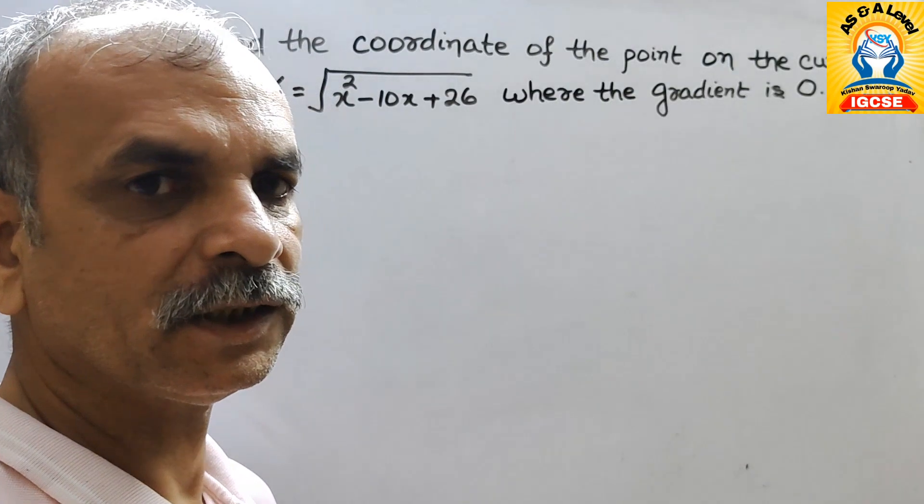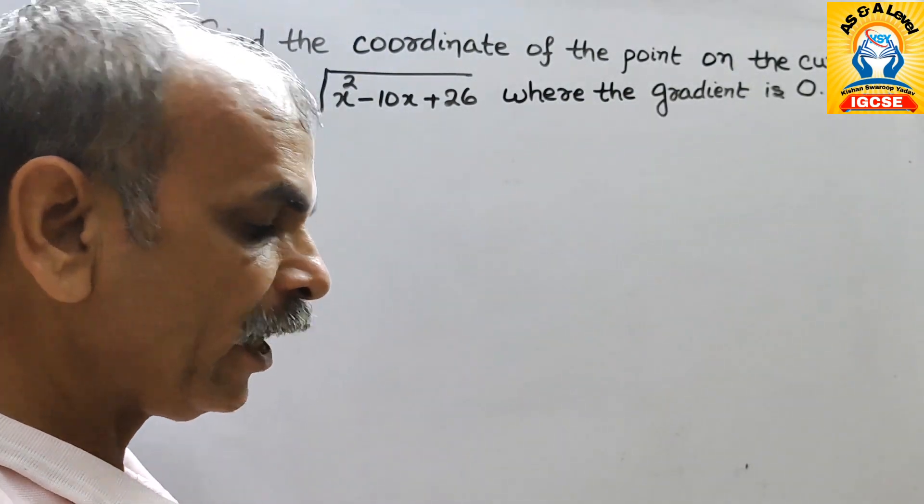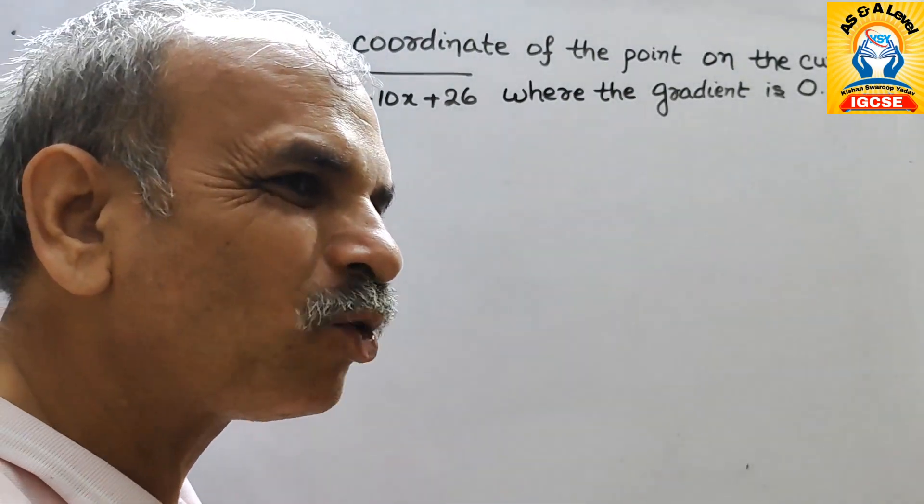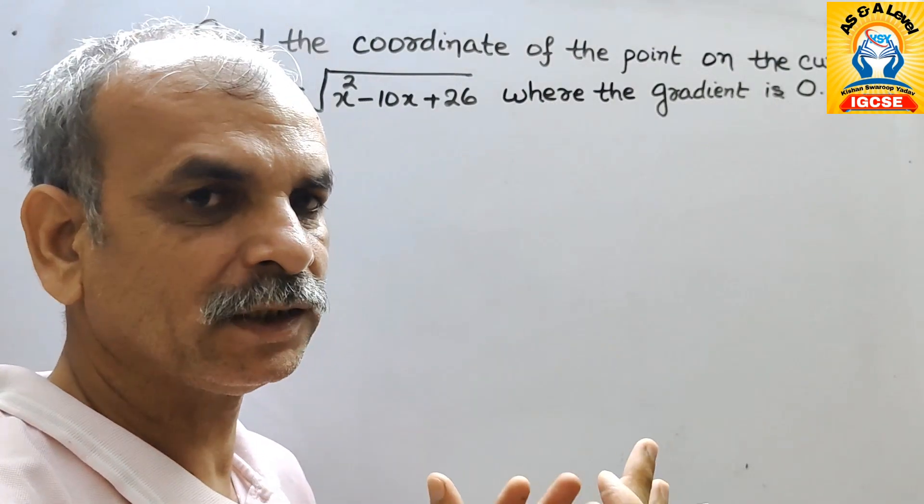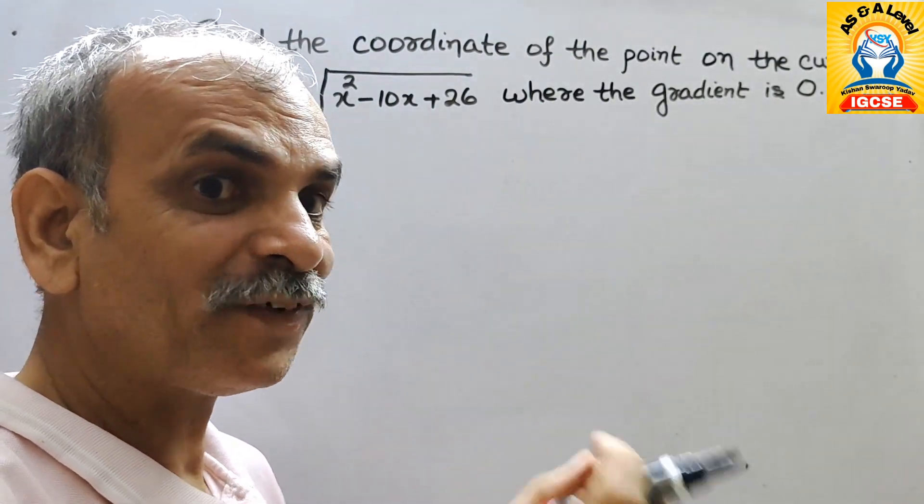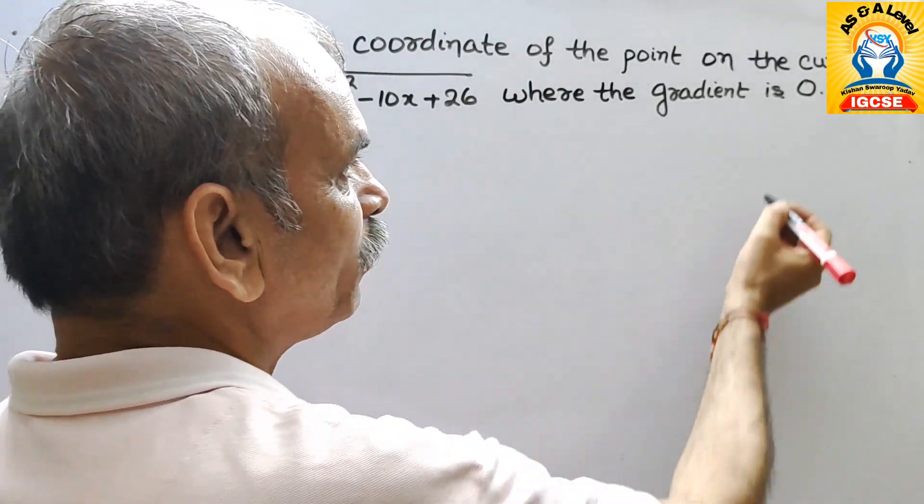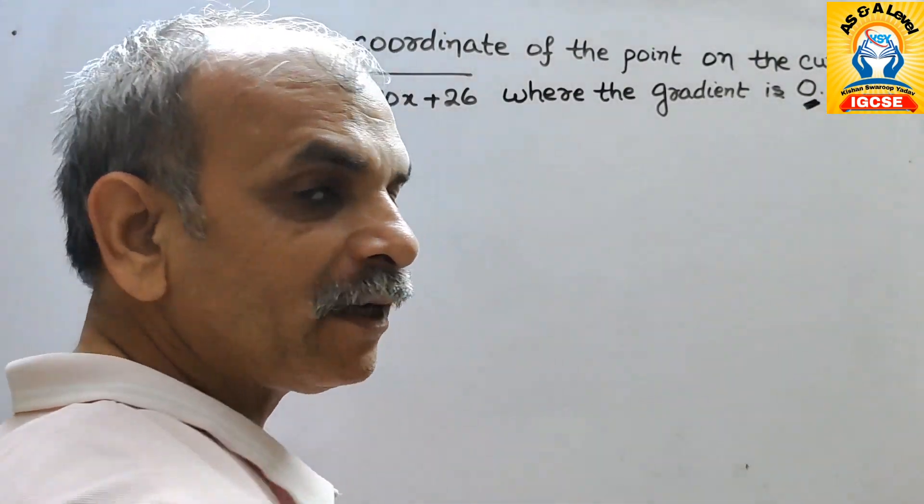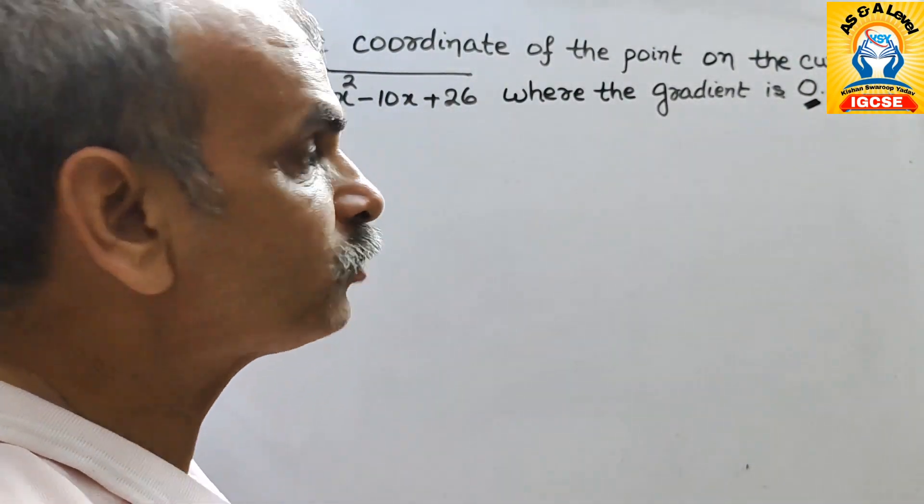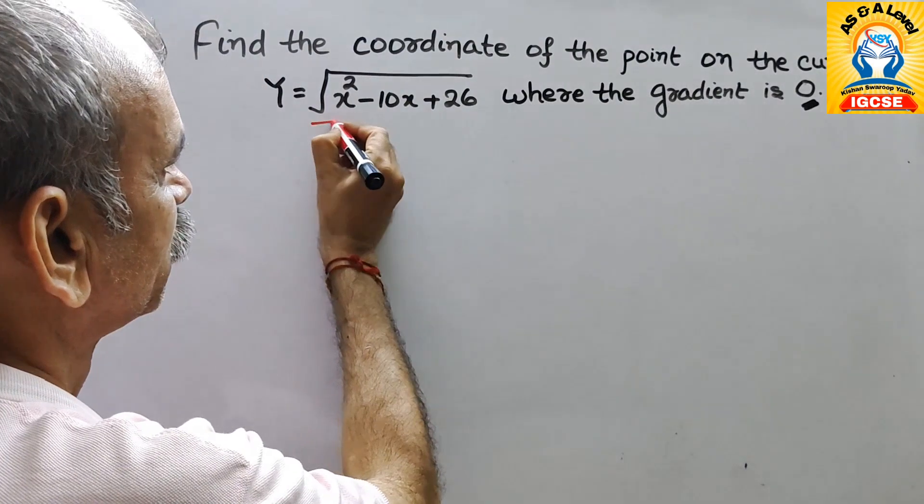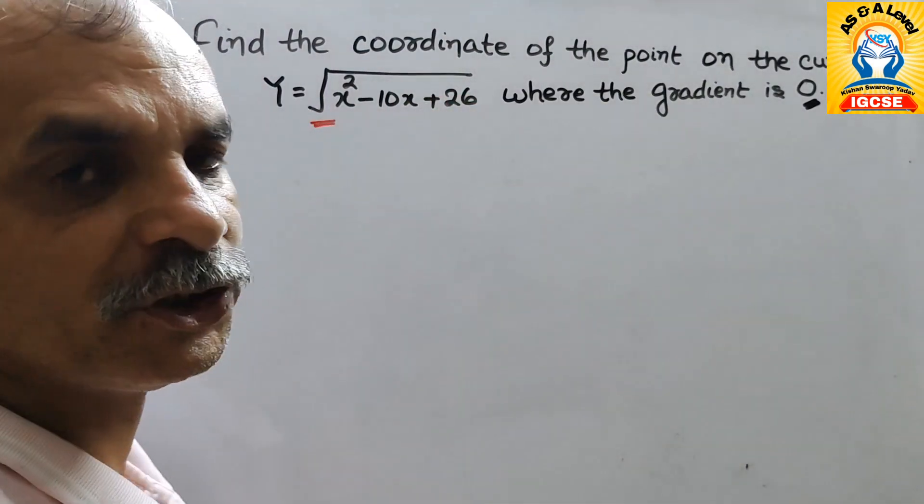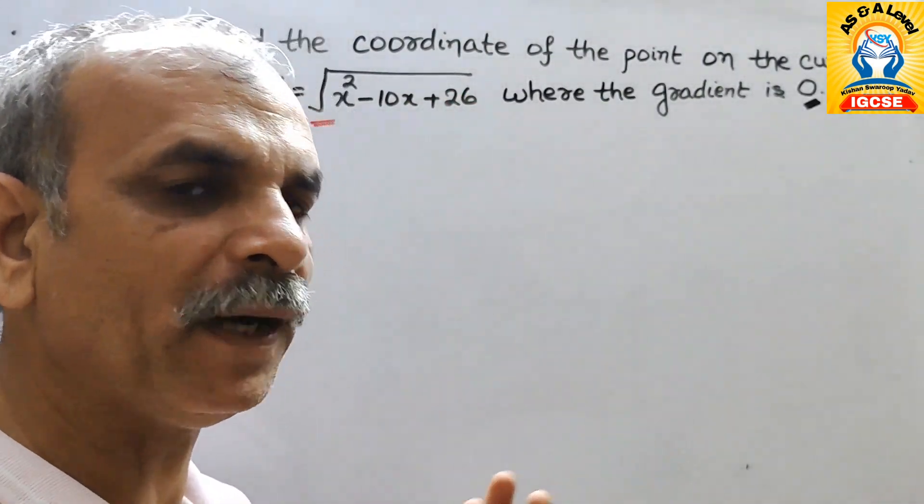Now understand this. They have told us we have to find out the points of gradient where it will become 0. That means we have to go for differentiation. Gradient is dy by dx.